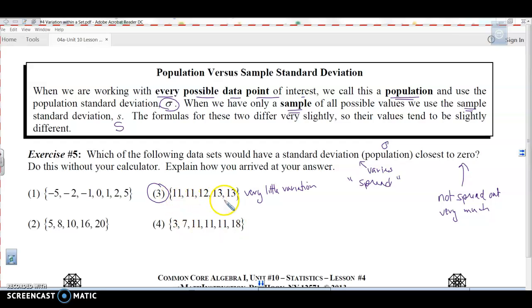So this would have a very small standard deviation. This one would be a population because these are all the data that we would be looking at. If we were looking at this one, which one would have the greatest variation?